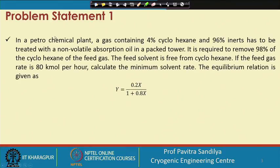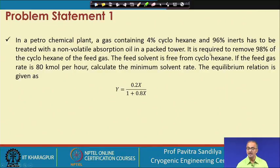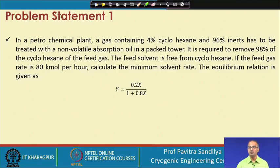Let us see Problem 1. We have a petrochemical plant where the gas contains about 4 percent cyclohexane and 96 percent inerts. This has to be treated with a non-volatile absorption oil in a packed tower, and it is required to remove 98 percent of the cyclohexane from the feed gas. A suitable solvent will be used, and it is assumed that the solvent is fresh — that means it does not have any cyclohexane to start with. If the feed gas is about 80 kilo mole per hour, we have to calculate the minimum solvent rate. We are given the equilibrium relationship in terms of the mole ratio of cyclohexane in the vapor phase and the liquid phase.